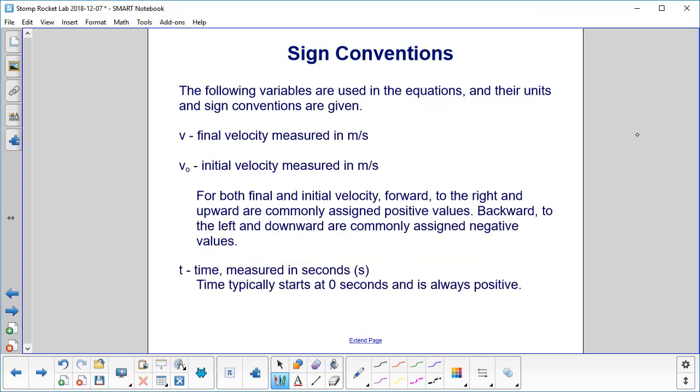Continuing our conventions, we have v, which is the final velocity measured in meters per second, and v0, which is the initial velocity. For both final and initial velocity, forward, to the right, and upward are commonly assigned positive values.